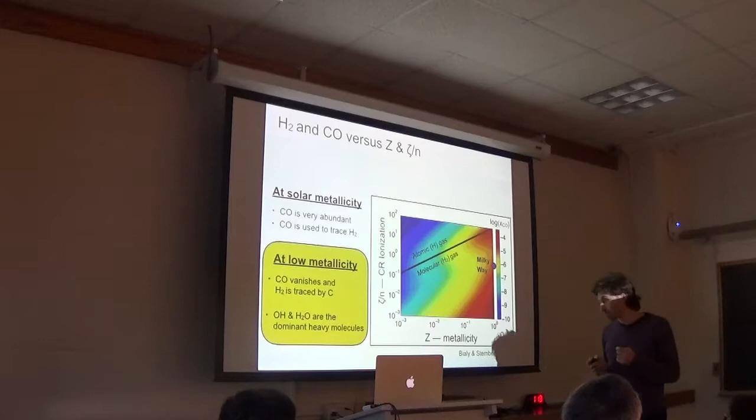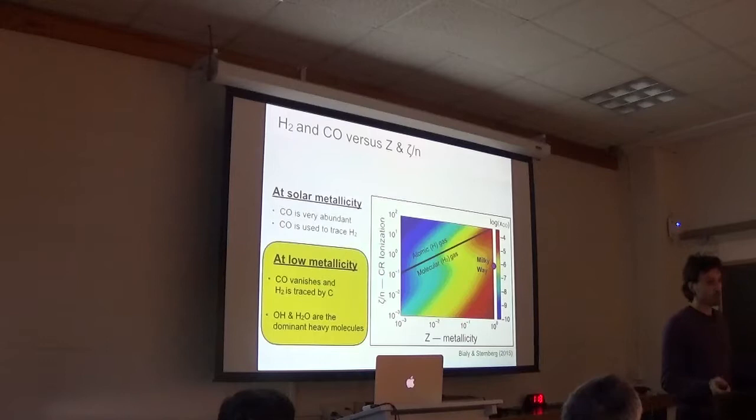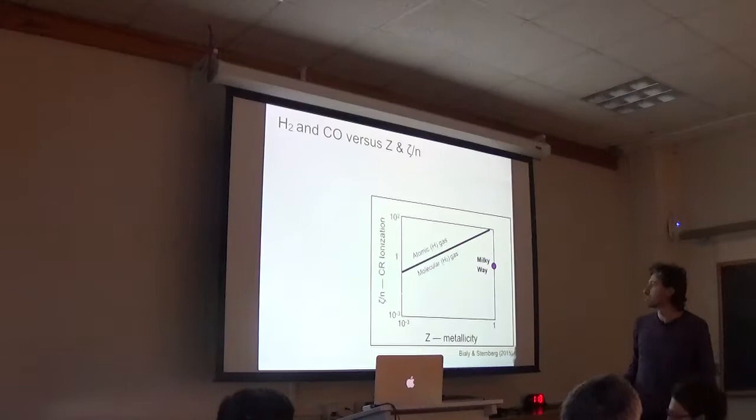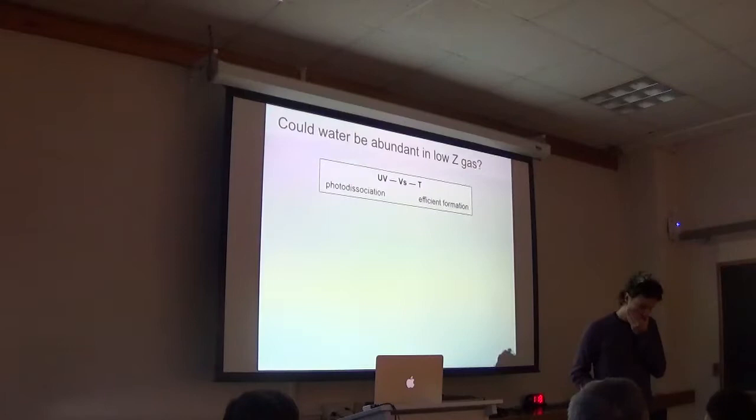So now where is CO in this picture? Now the color coding is CO abundance. This is log scale from 10 to the minus 4 down to very low CO abundances. So here's the Milky Way. For the Milky Way, the value is about 10 to the minus 4, meaning all the carbon is in CO as we know. And that's why CO is very good to trace the molecular gas.